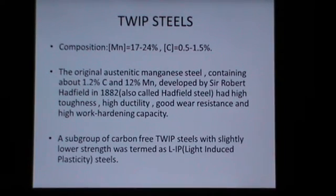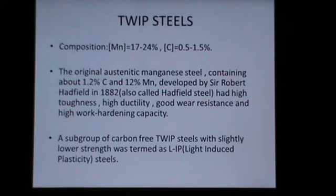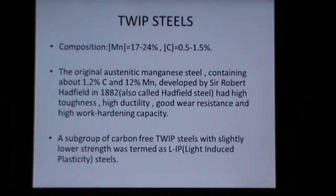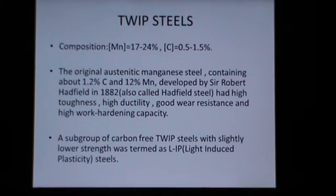We now move on to TWIP Steels. TWIP, as the name suggests, refers to the Twinning Induced Plasticity steels. Regarding their composition, TWIP Steels are very high manganese steels, containing 17 to 24 percent of manganese by weight, whereas the amount of carbon contained in TWIP Steels is between 0.5 to 1.5 percent by weight.